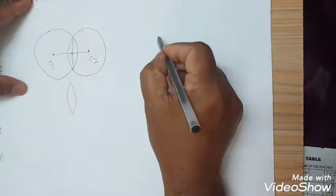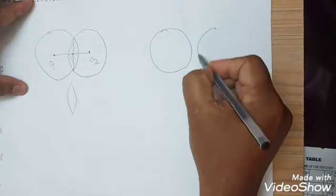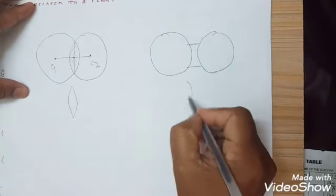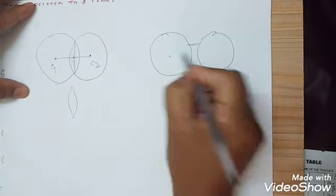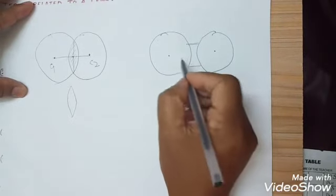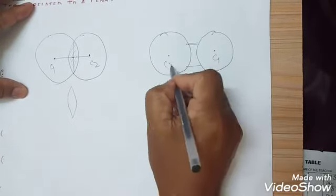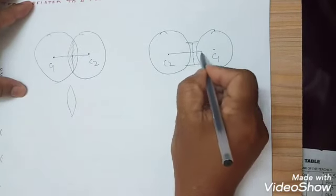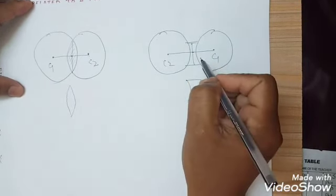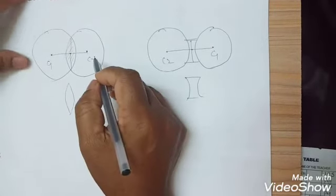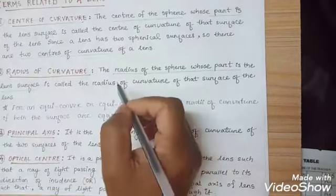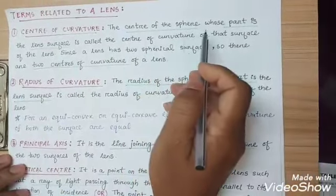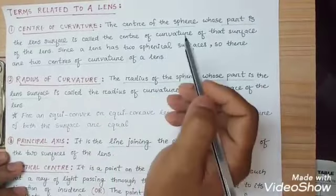Similarly for the concave lens, there are also two centers C1 and C2, and also the midpoint which is the optical center. Joining them gives the principal axis. Center of curvature is the center of the sphere from which the lens surface is a part.